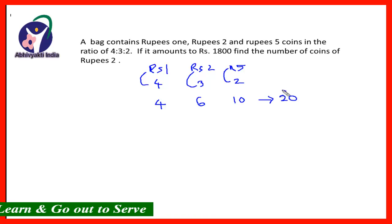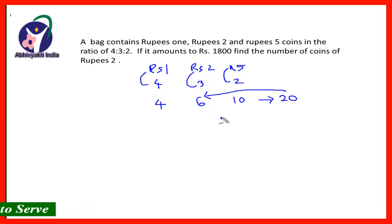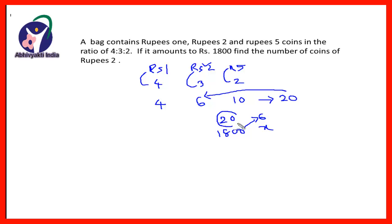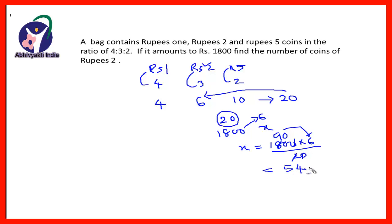Now, when the total value is 20, the 2-rupee coins have a value of rupees 6. So when the total value is 1800 rupees, what will be the value of the 2-rupee coins? This is a direct variation, so we multiply: x = 1800 × 6 ÷ 20. Cancelling the zero gives 2×9 = 18, and multiplying by 2 gives 540 rupees. So the 2-rupee coins amount to 540 rupees.